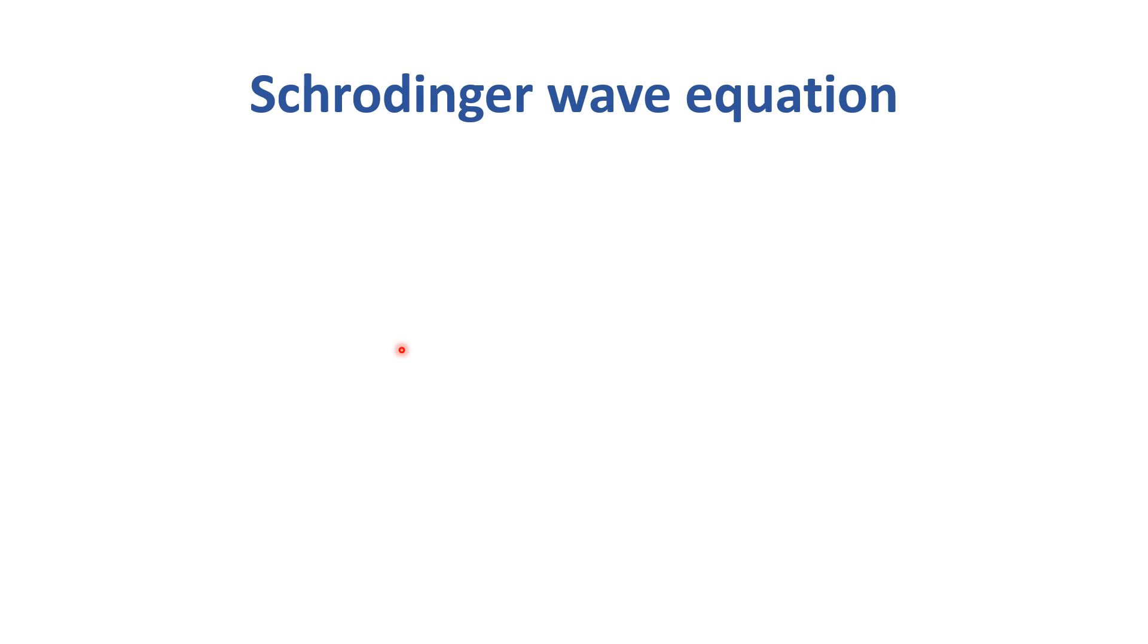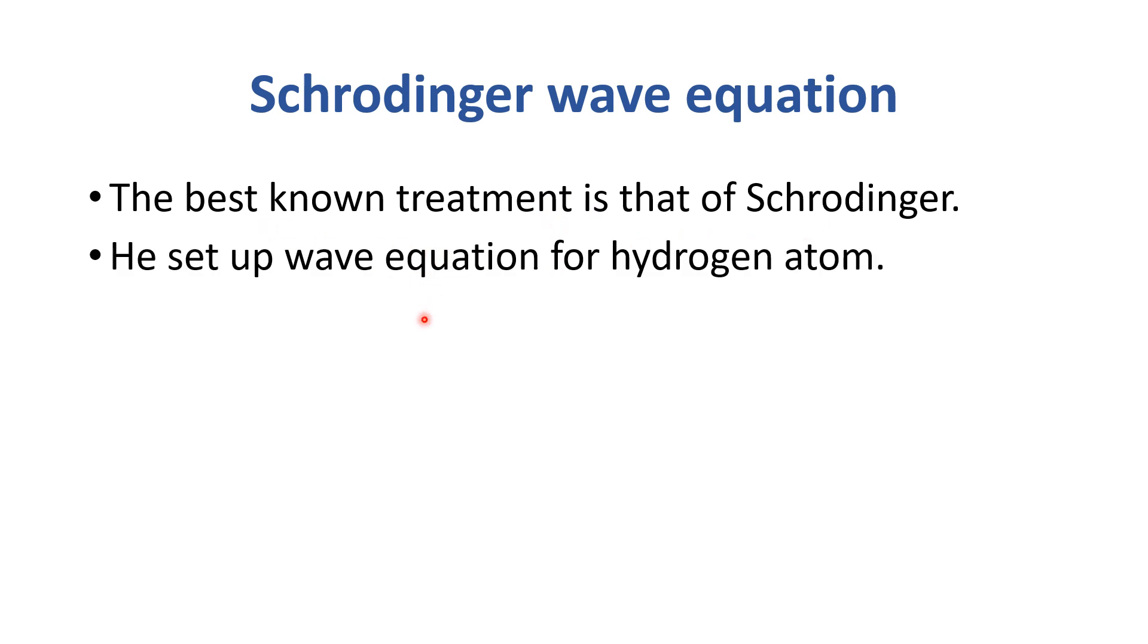Let's see how Schrödinger solved that mystery. The best known treatment is that of Schrödinger. He set up wave equation for hydrogen atom. Schrödinger basically explained the wave nature of electron.